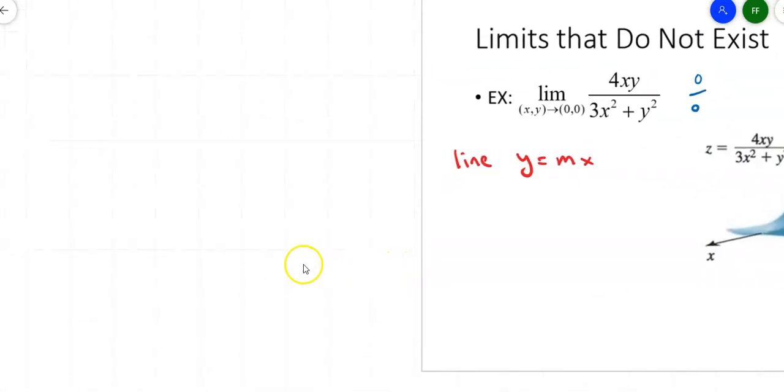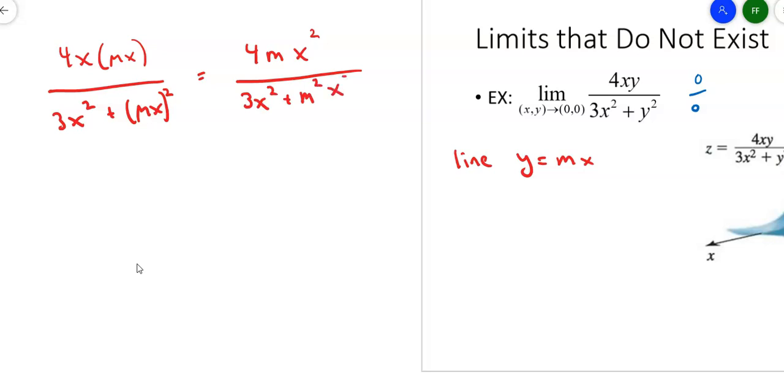Let's replace those y's with mx's. So I got 4x times mx over (3x squared plus mx squared). On the top, it gives me 4m times x squared. On the bottom, it gives me 3x squared plus m squared x squared. Factor out an x squared in the bottom, and I'm left with 4mx squared over x squared times (3 plus m squared).